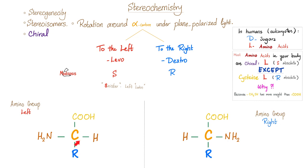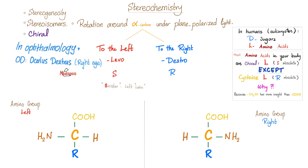Let me rotate around the beautiful alpha carbon. You can rotate to the left or to the right. To the left, we call you levo. To the right, we call you dextro — because the word dextro in Latin means right. How about left? Left is levo or S, because sinister in Latin means left. So to the left is levo, is S. To the right is dextro, which is R.